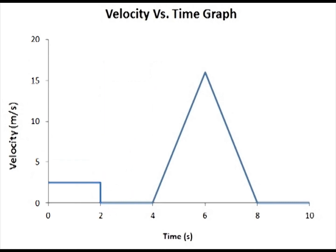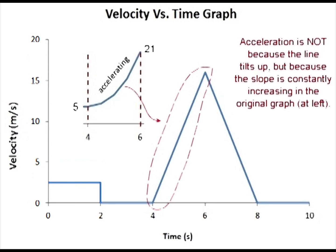When it accelerates, I have a straight line up for uniform acceleration. That means accelerating at the same rate. Please note that acceleration is not because the line tilts up, but because the slope is constantly increasing in the original graph at the left. From 5 meters to 21 meters in 2 seconds is equal to a 16 meter change divided by 2 seconds or a speed increase of 8 meters per second.